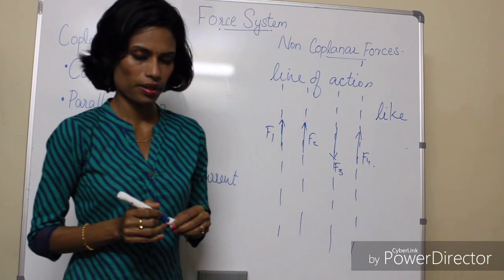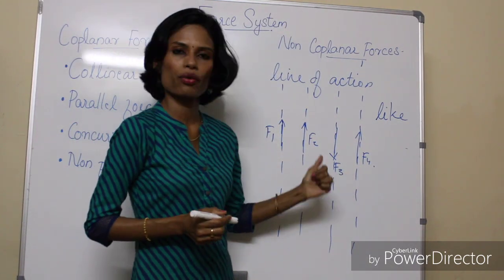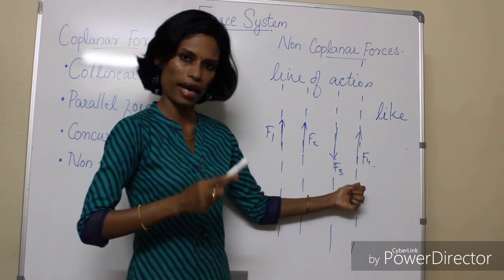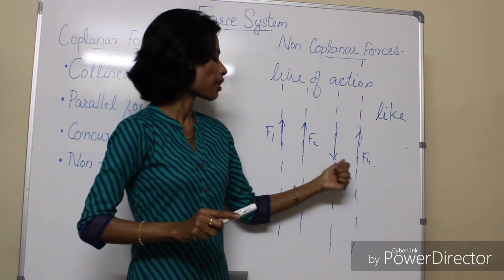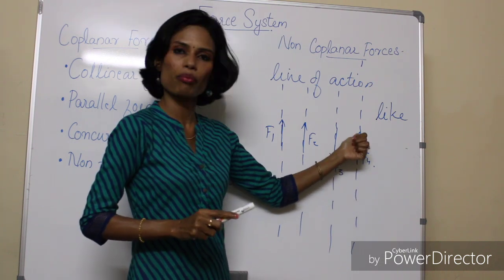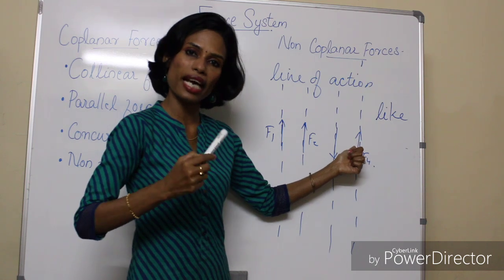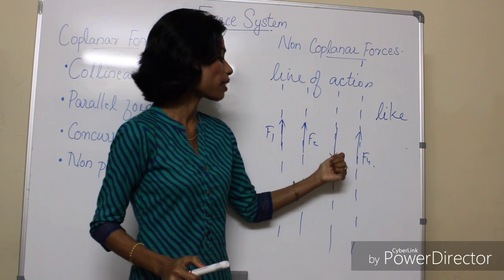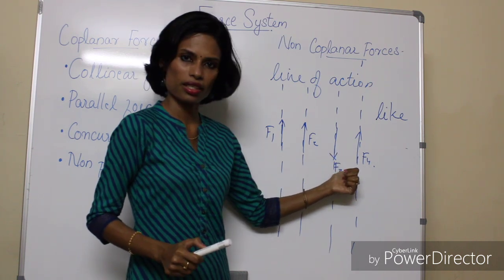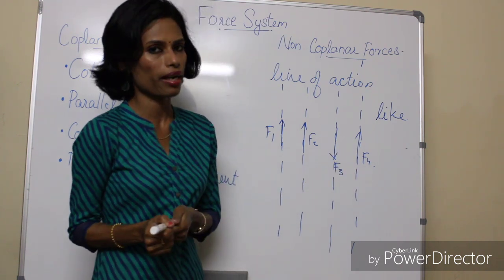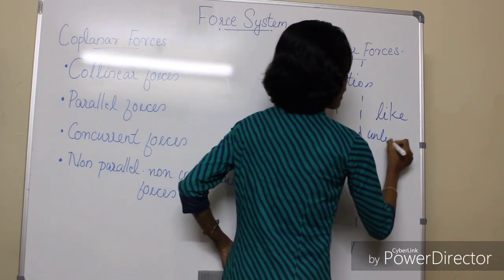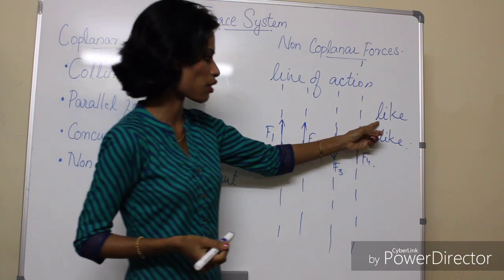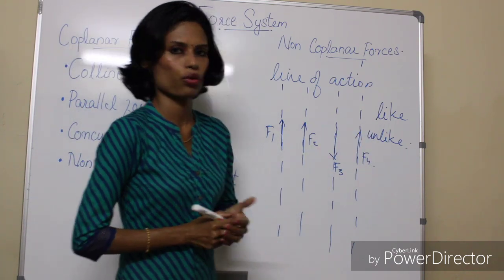Now consider F3 and F4. F3 and F4 have parallel lines of action, so they are parallel forces. But the direction of F3 is downward and F4 is upward — so the directions are different. Lines of action are parallel but the directions are different, so they are known as unlike parallel forces. So parallel forces have two classifications: like parallel and unlike parallel forces.